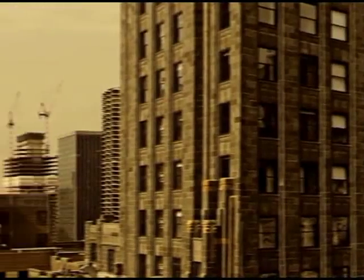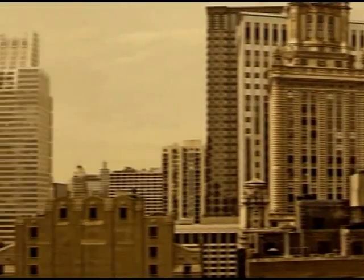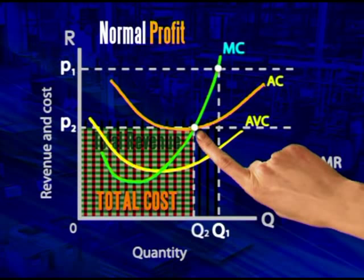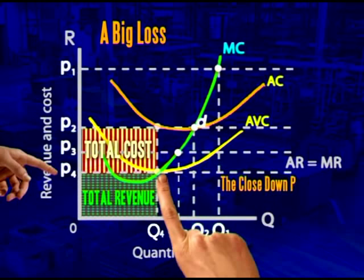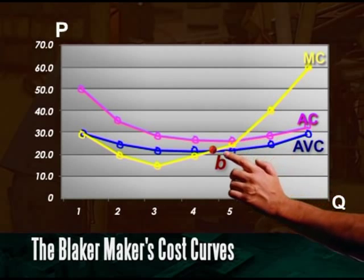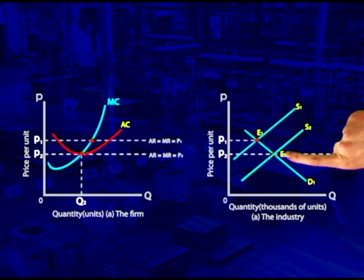We've added a few more things to our toolbox: perfect competition, illustrating the equilibrium position of the firm, the close down point of the firm, the supply curve of the firm, and the firms entering and exiting the market will cause a shift of the supply curve.